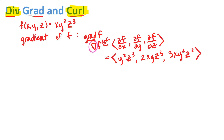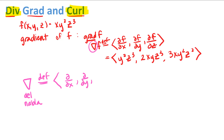When we first talked about the gradient vector, we talked about that del symbol — sometimes called a nabla — which is really defined to be a set of operators: a derivative with respect to x, a derivative with respect to y, and a derivative with respect to z. That's if we're working with a function of three variables; if we had more variables we might use subscripts, or fewer we might just have x and y.